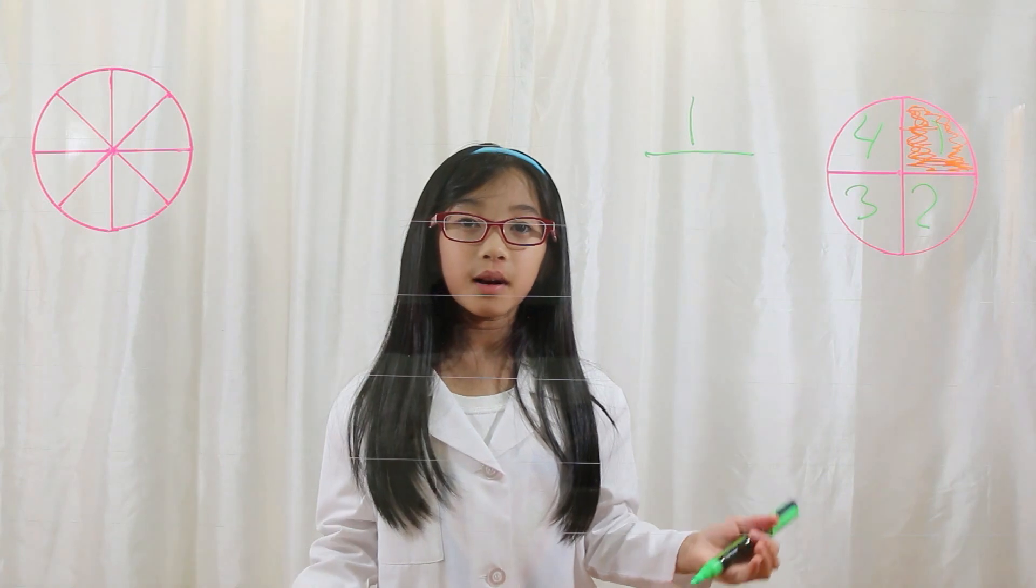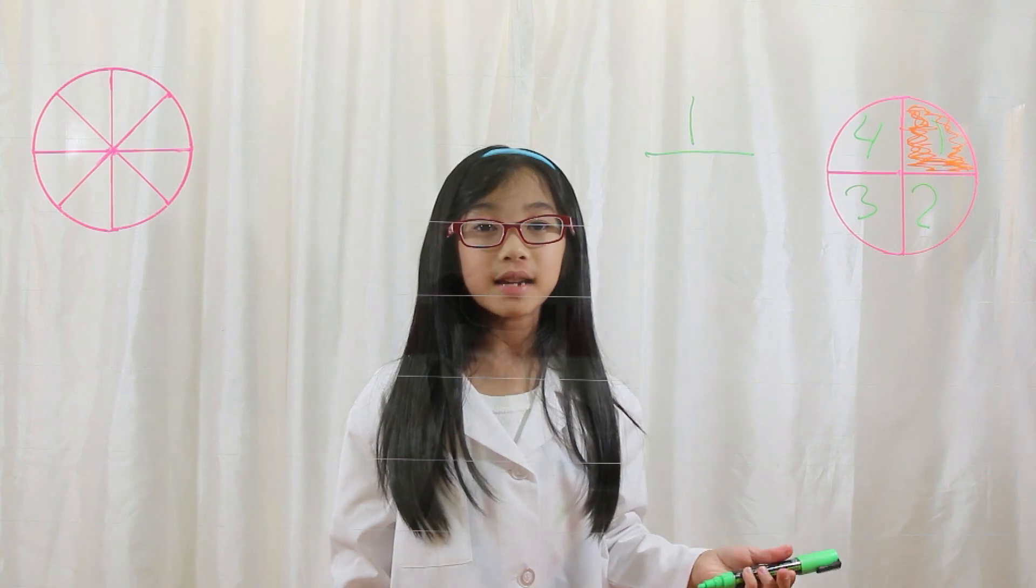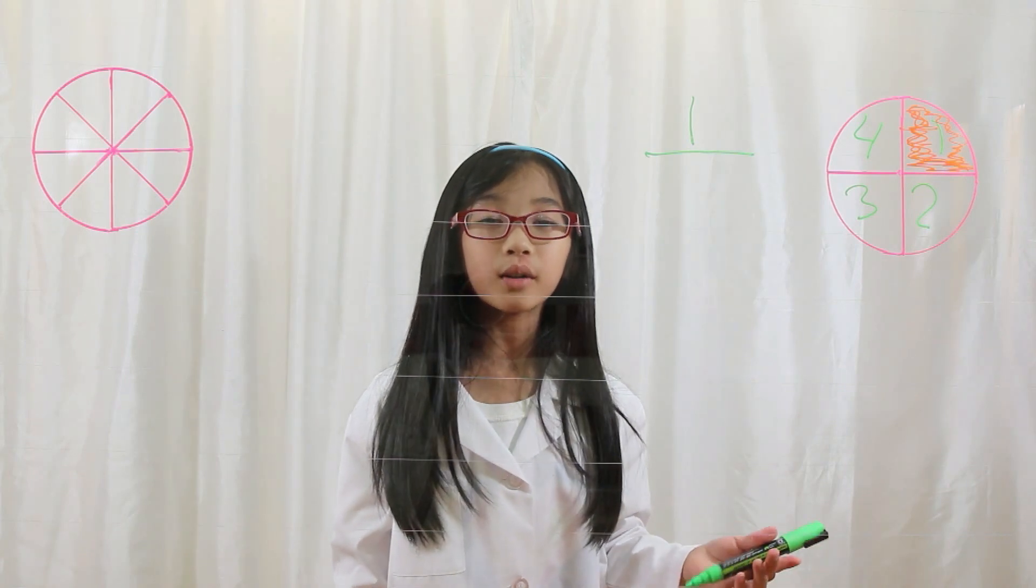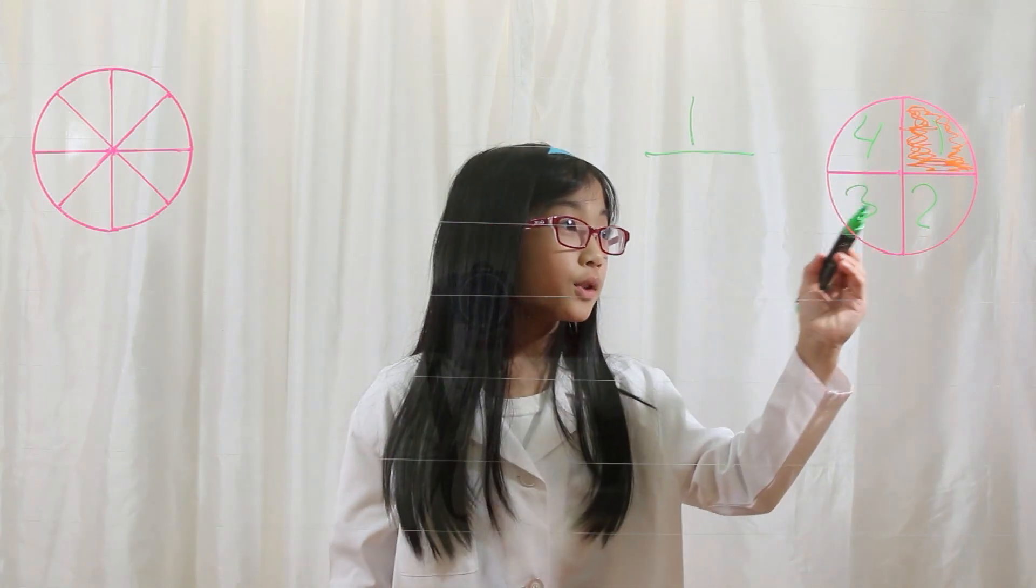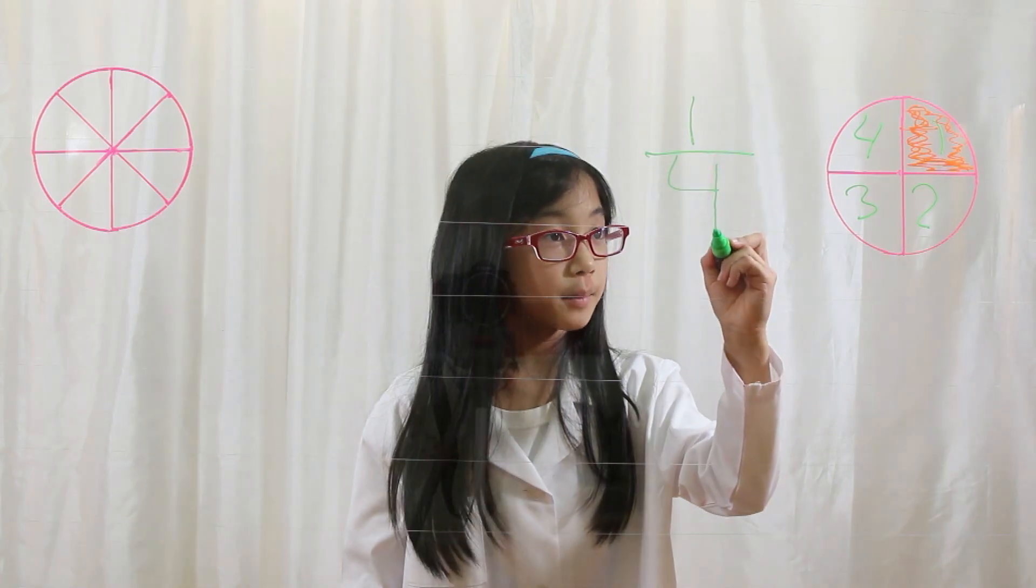What is our denominator? Well, what is a denominator? A denominator is how many parts there are in a total whole. So there are one, two, three, four parts. So four is our denominator.